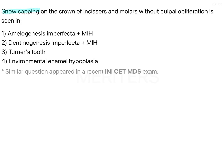Snow capping on the crowns of incisors and molars without pulpal obliteration is seen in which of the following? The options are: amelogenesis imperfecta, MIH (molar incisal hypermineralization), dentinogenesis imperfecta with MIH, Turner's tooth, and environmental enamel hypoplasia.